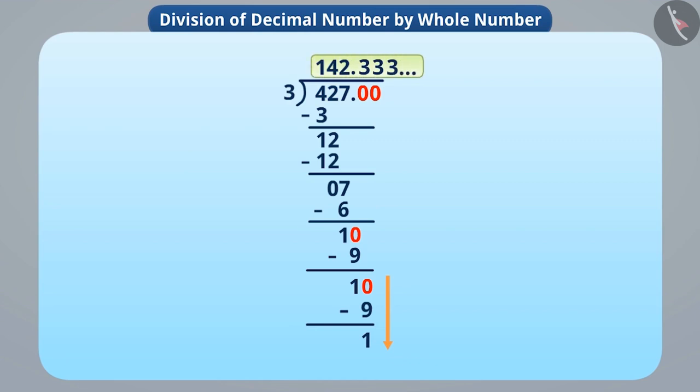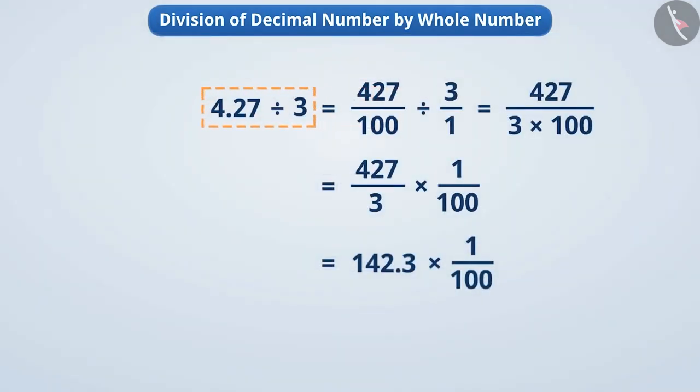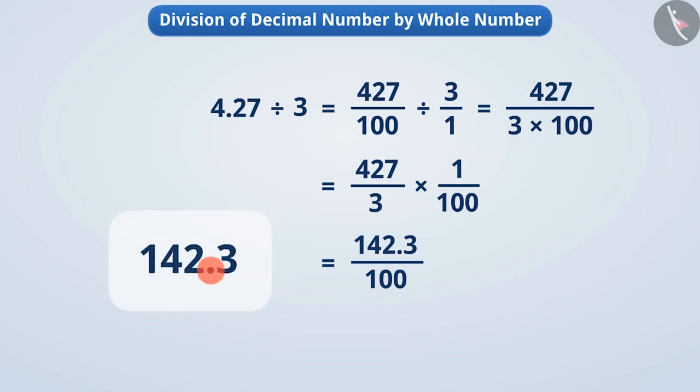Thus, the number will never end. Therefore, we limit the number to as many digits as required. Like here, we will take only till 142.3. So, now we can write 4.27 divided by 3 as 142.3 into 1 by 100. We can write this as 142.3 by 100. To divide it by 100, we move the decimal point two places to the left. This will result in 1.423.